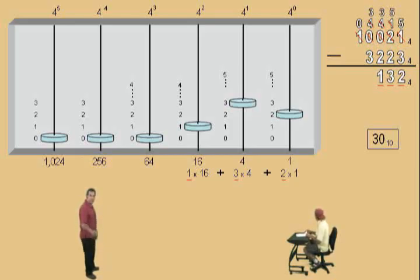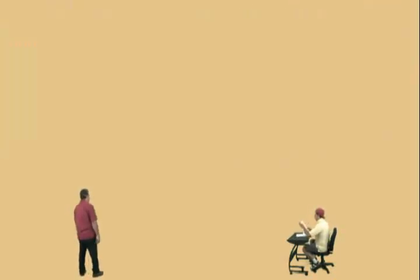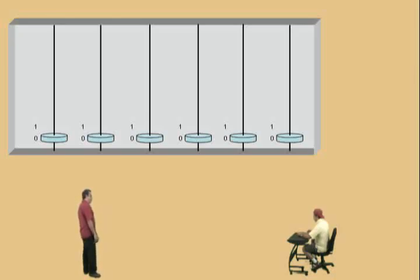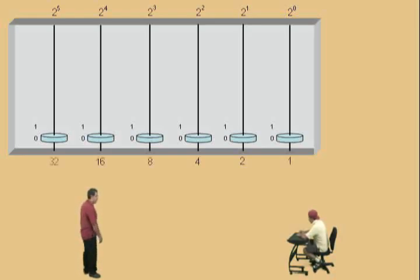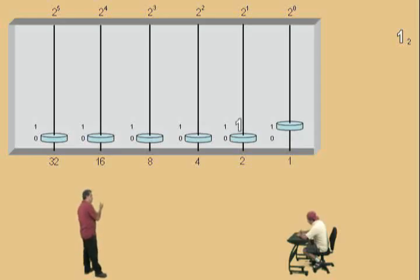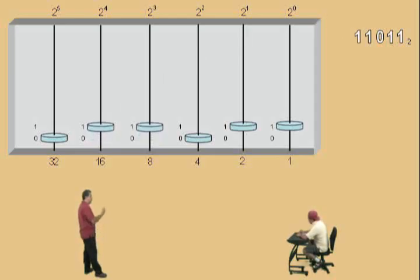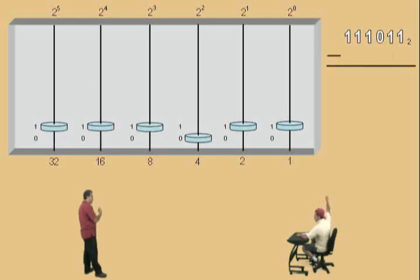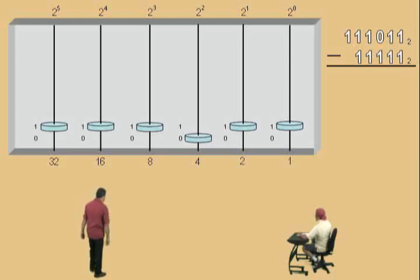We've got one more to go. Don't get scared. Here we go, Charlie — base 2. Now again, let's list our place values. And remember, in base 2 we are borrowing 2s. So here we go, Charlie. Let's enter our number: 1, 1, 0, 1, 1, and a 1 there. Now from that number, we are going to subtract another 1, 1, 1, 1, 1, 1. So there's all our numbers.